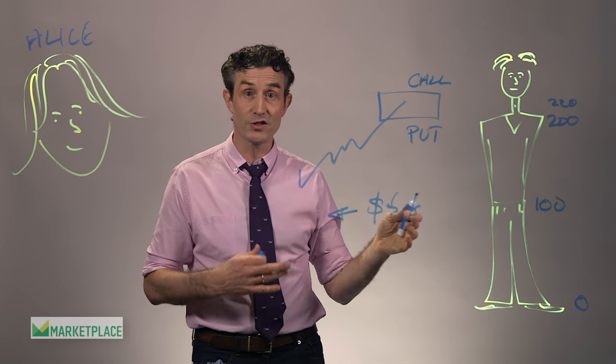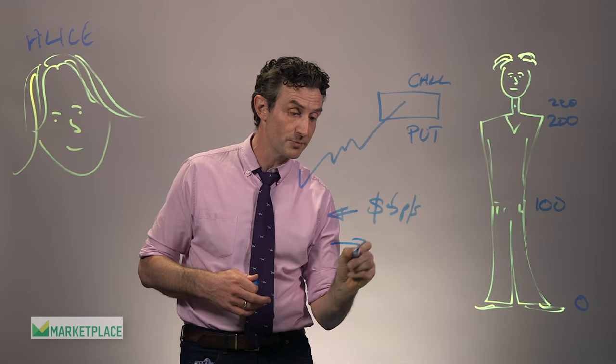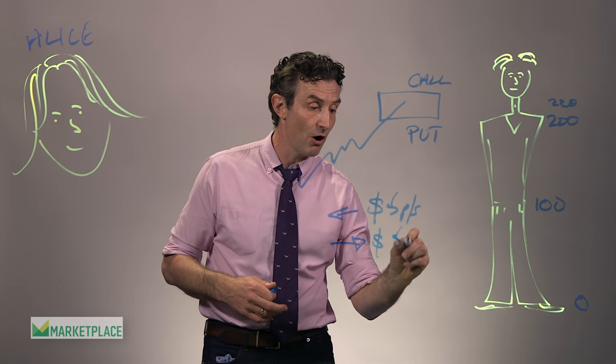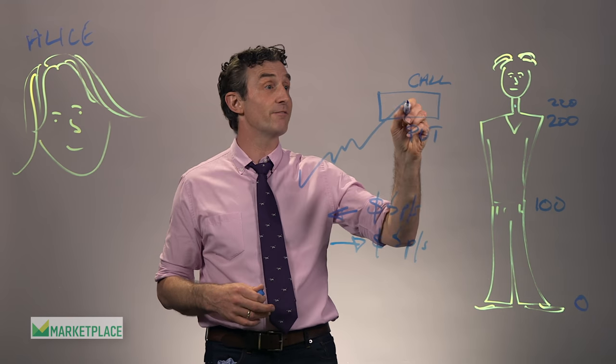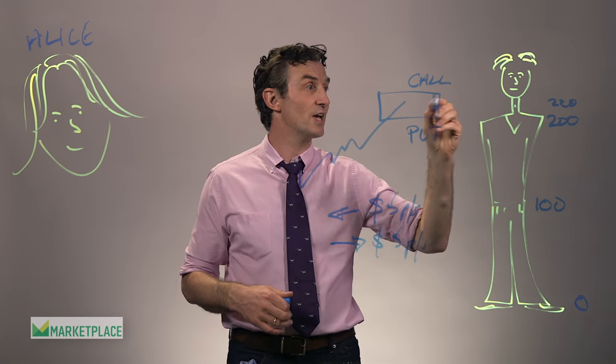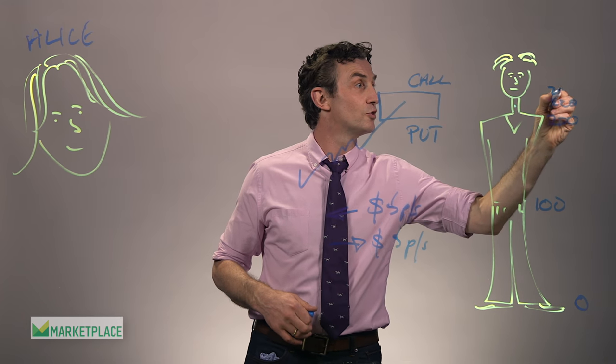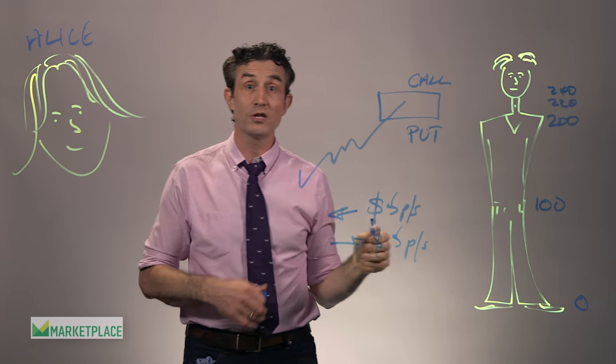And in this case, another investor is paying her five dollars per share for the option to buy her shares if they go above a certain price, in this case, ear level or about two hundred and forty dollars a share.